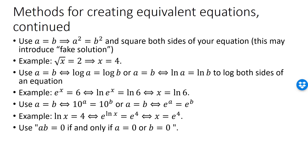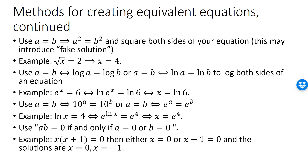Finally, an important strategy is to move all terms to the left-hand side so that the right-hand side is 0. If we can factor the expression on the left-hand side, we can use the fact that a product of two terms is 0 if and only if one of the terms is 0. For example, the equation x(x + 1) equals 0 has solutions x equals 0 and x equals −1.